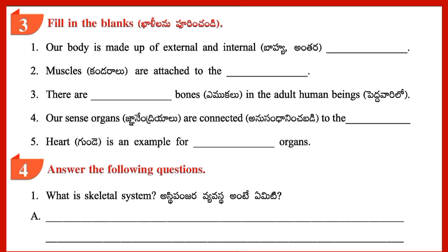Section 3: Fill in the blanks. 1. Our body is made up of external and internal organs. 2. Muscles are attached to the bones.